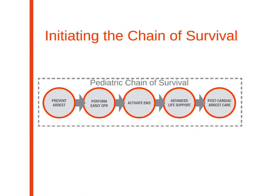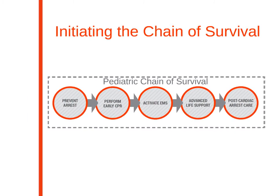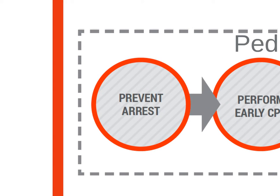Now let's review the pediatric chain of survival. Typically, children do not experience cardiac arrest alone. It is usually due to respiratory arrest or dehydration, which leads to cardiac arrest. The pediatric chain of survival is similar to the adult chain of survival, with slight variation. First, prevent arrest. This means that if you witness a child that is experiencing respiratory distress or severe dehydration, take immediate action.